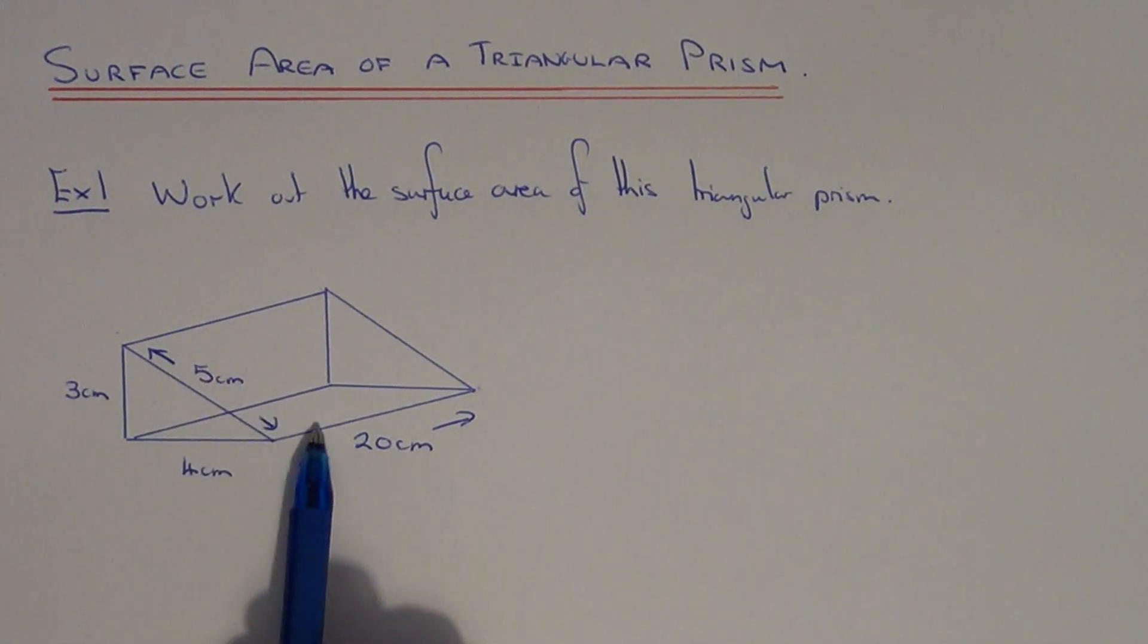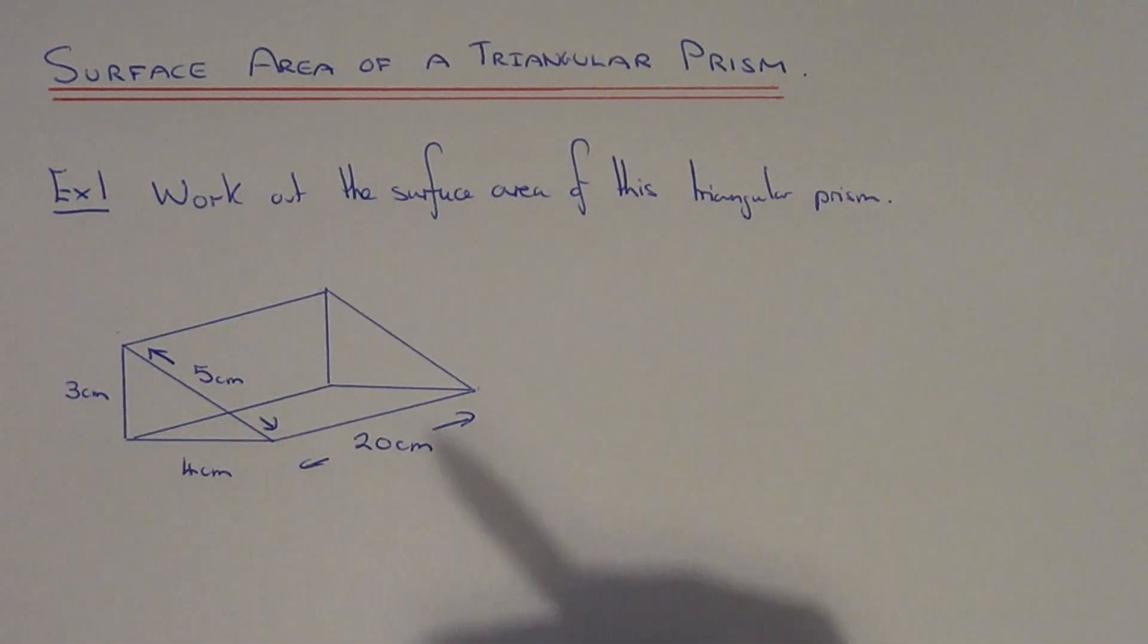And the three other sides are rectangles. So to work out the area of a rectangle just multiply the two sides together. So it's length times width.